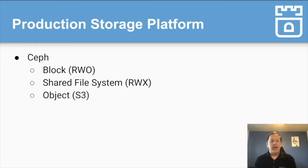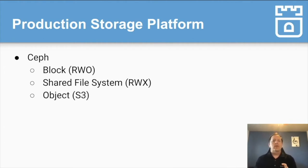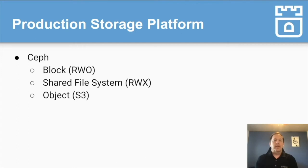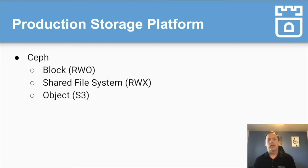So what does Ceph provide? There are basically three types of storage: block storage for read-write-once applications; shared file system, CephFS, for read-write-many applications that need to share storage across their pods; or object storage, which will let you put and get objects to an S3 endpoint.